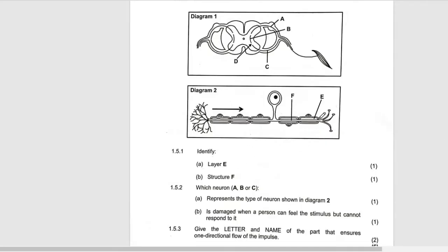Now let's start answering. Layer E, we have seen it is myelin sheath. Structure F, it is axon because this is after the cell body.